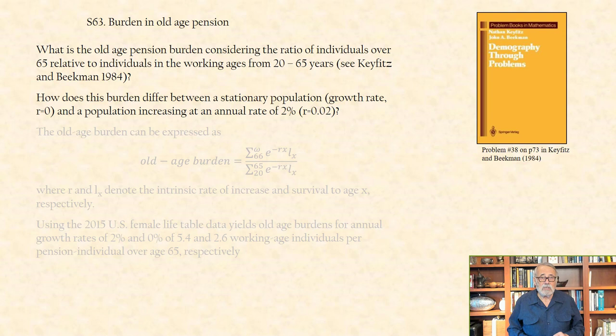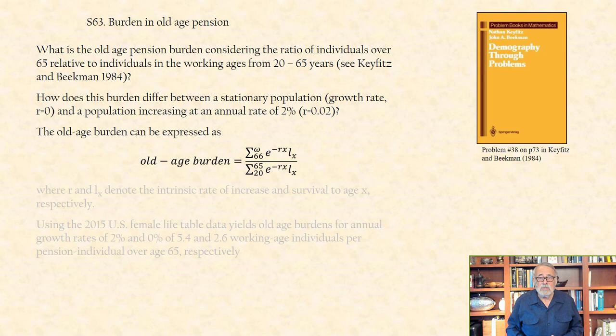The old age burden can be expressed as, with this model, the ratio of the sum of life years for ages beyond 65 to those between ages 20 and 65, shown in this expression, where R and L_x denote the intrinsic rate of increase and survival to age x, respectively.